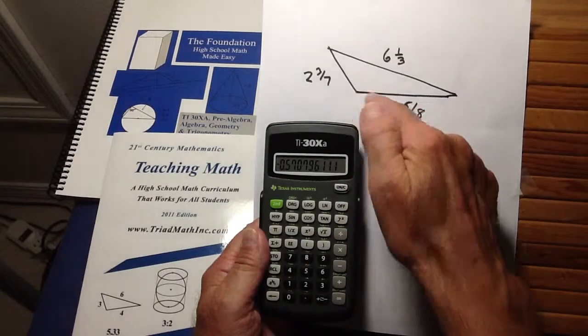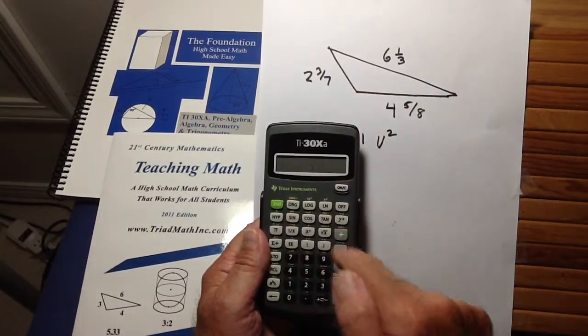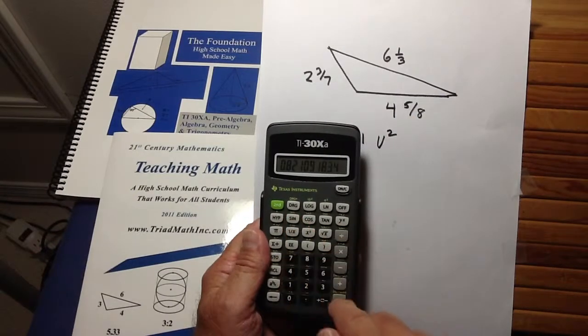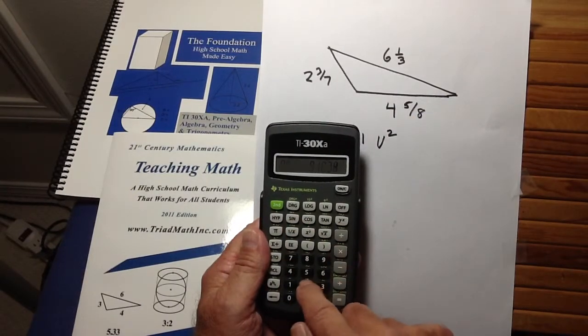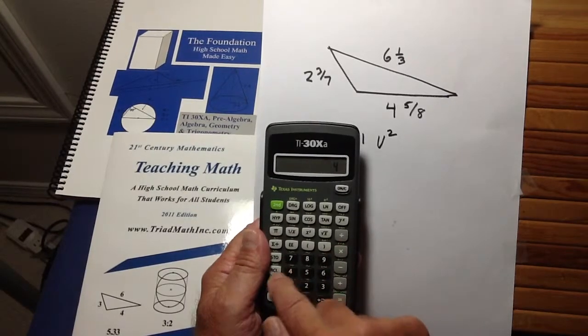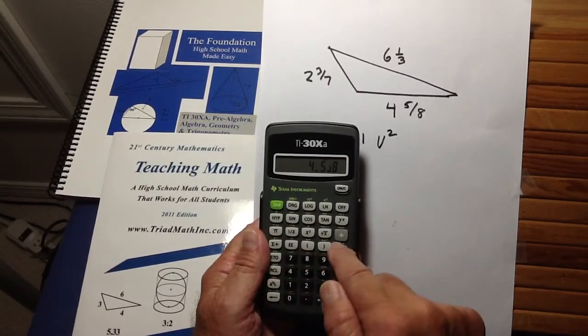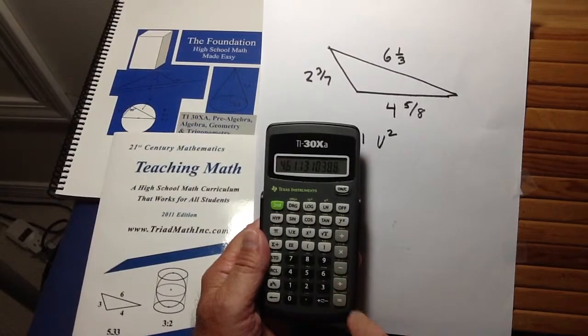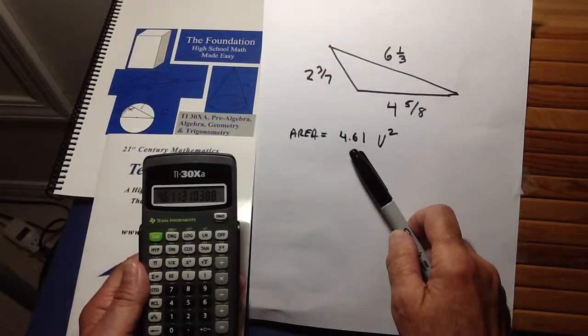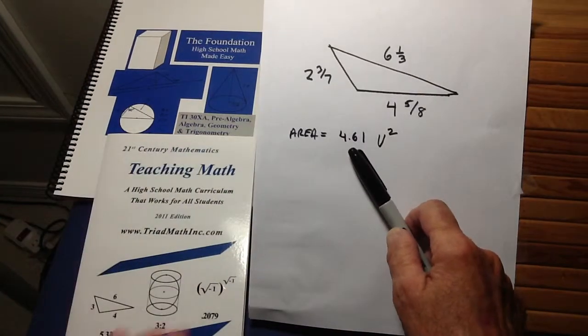And then this is the cosine of this angle. So I take inverse cosine, and I get this angle. Now I know to take the sine of that angle times 2 and 3/7ths times 4 and 5/8ths times 0.5 equals, and I get 4.61. And so that is the area. And that's just how easy it is to do with a calculator. That would be extremely difficult to do this manually.